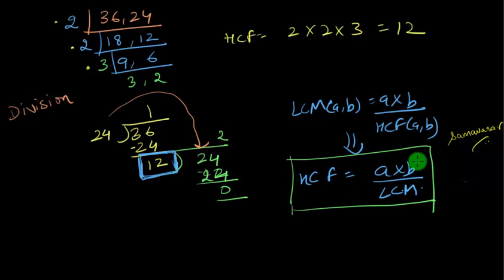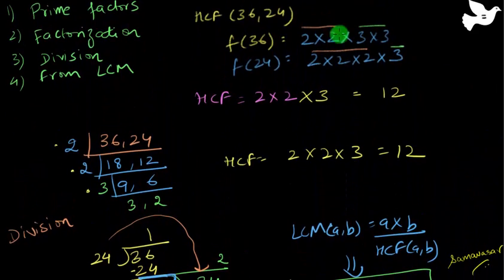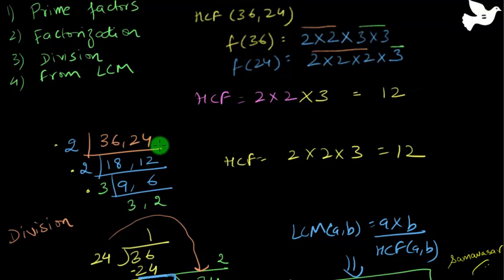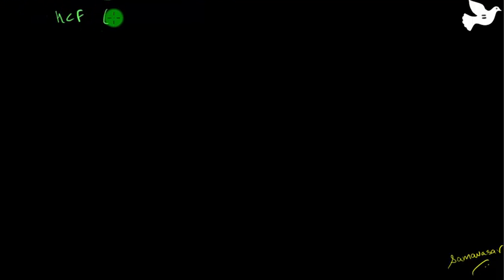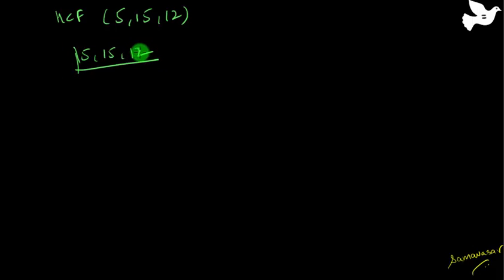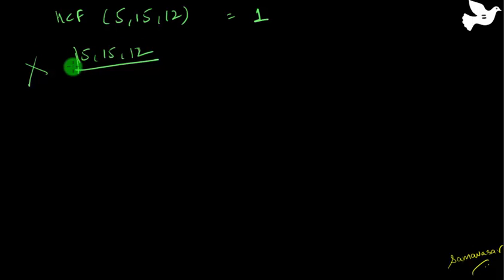What happens if I have three numbers? It works normally — I can find the factor groups and take the smaller groups. In the factorization method for HCF, you have to take numbers which divide all three numbers. For example, finding HCF of 5, 15, and 12: I can see there is no number which divides all three. I cannot say 5 divides two of them and include it — you must find factors of all three. So the HCF is 1.